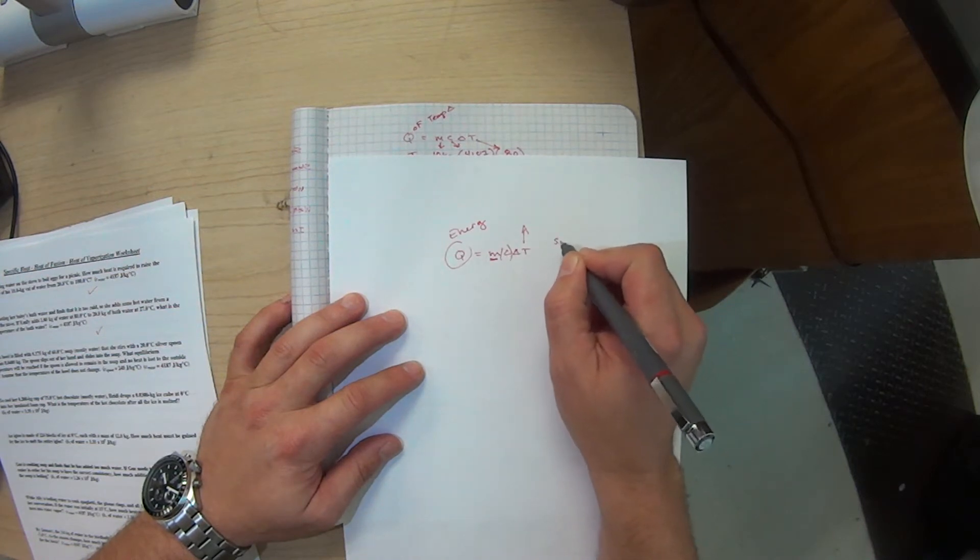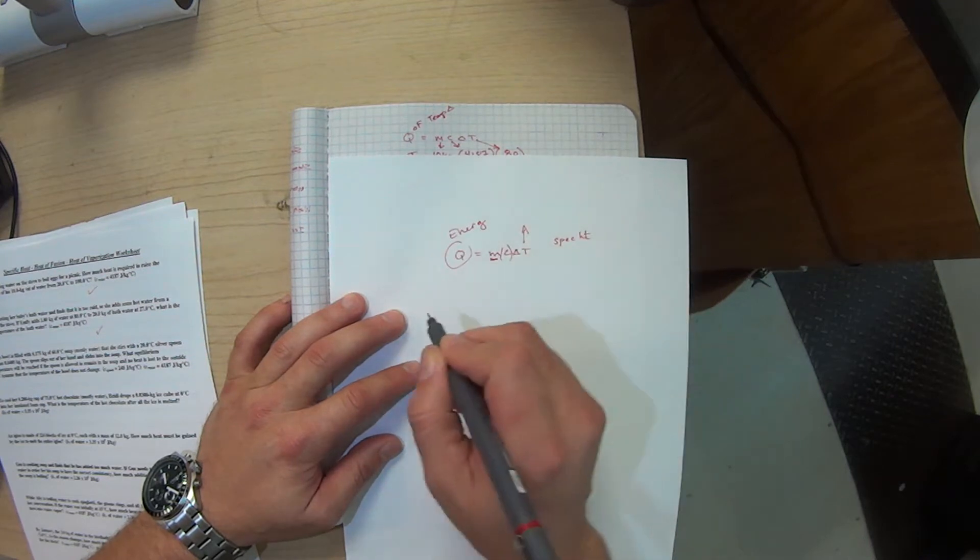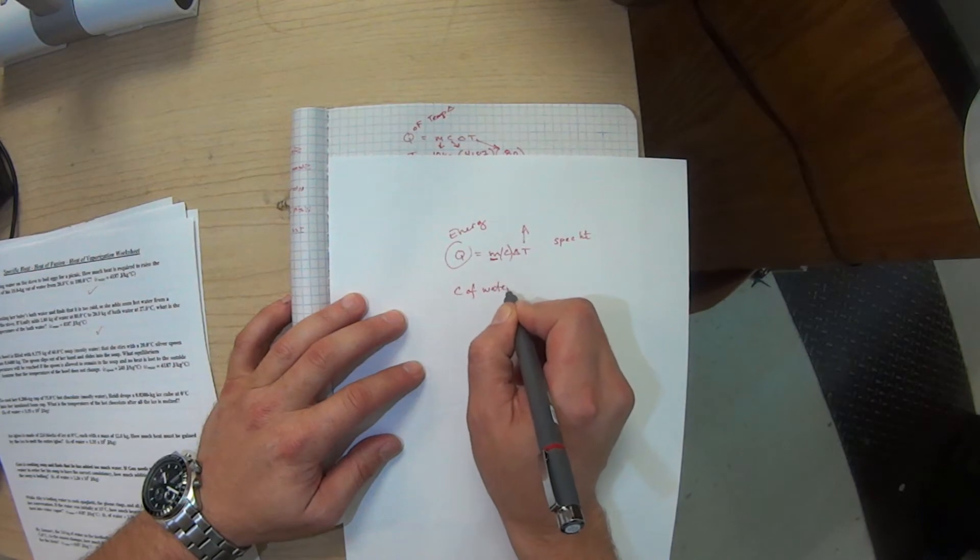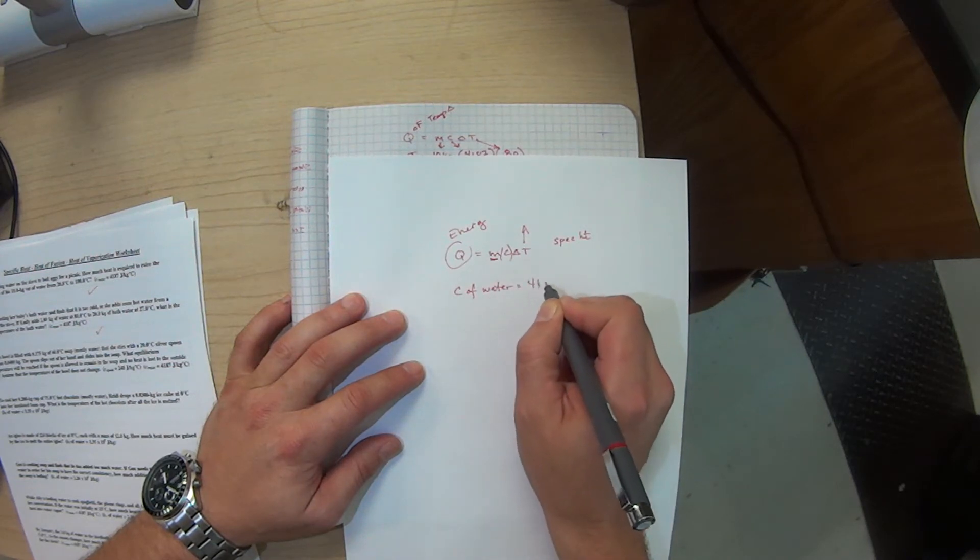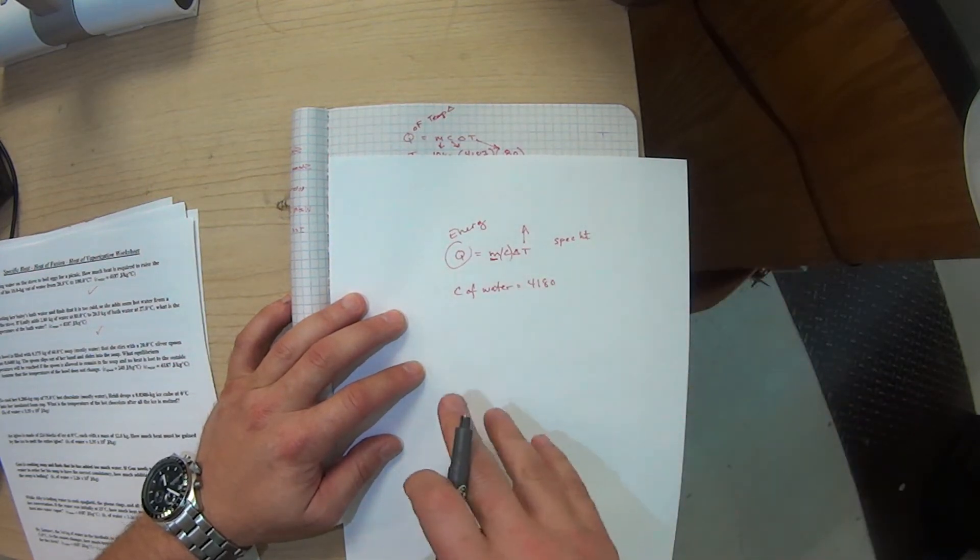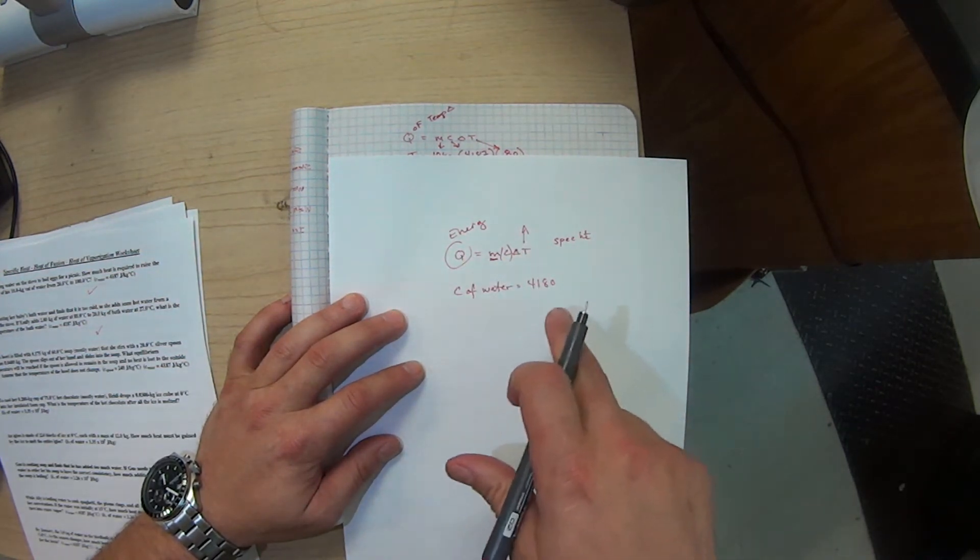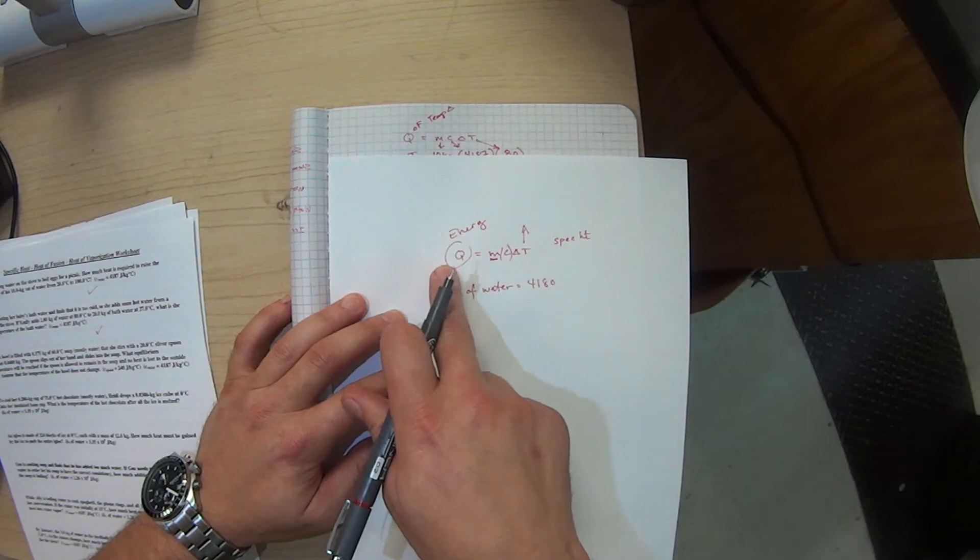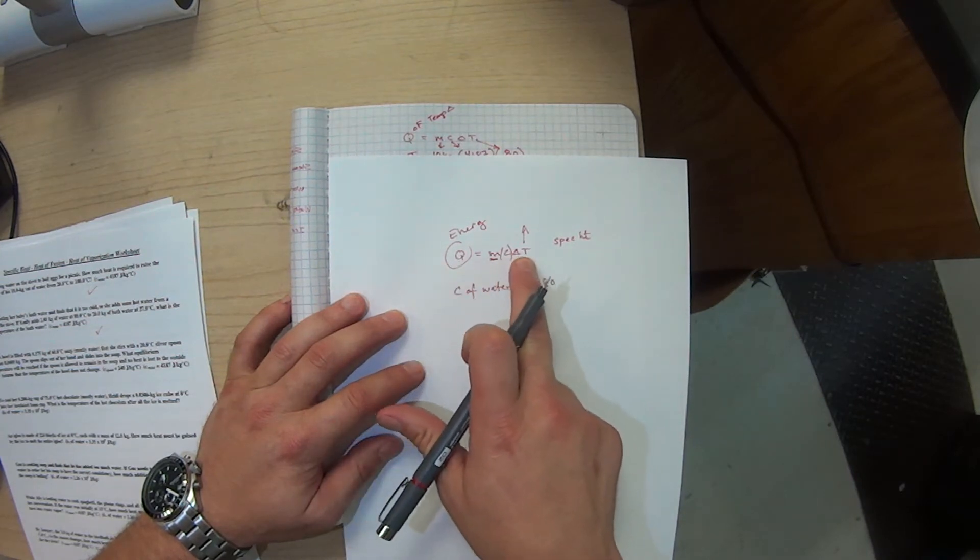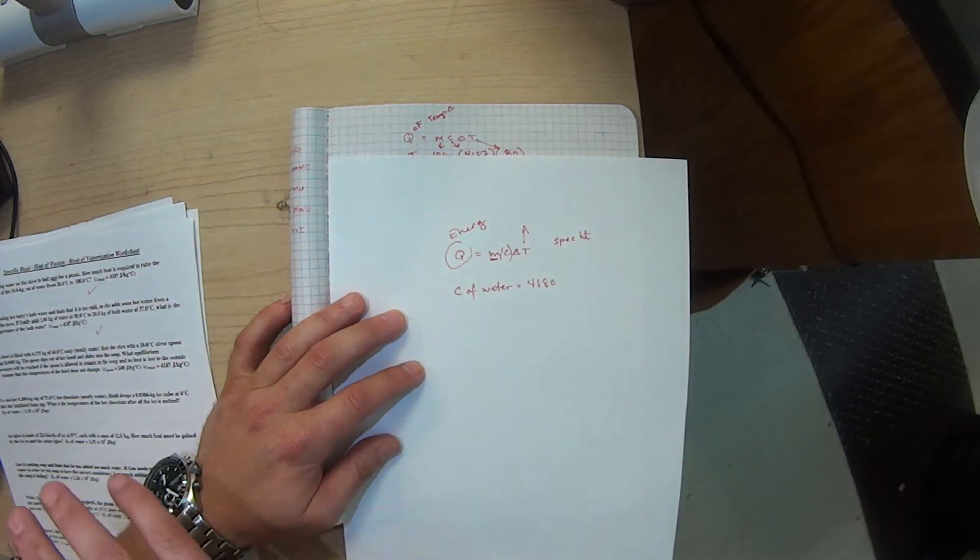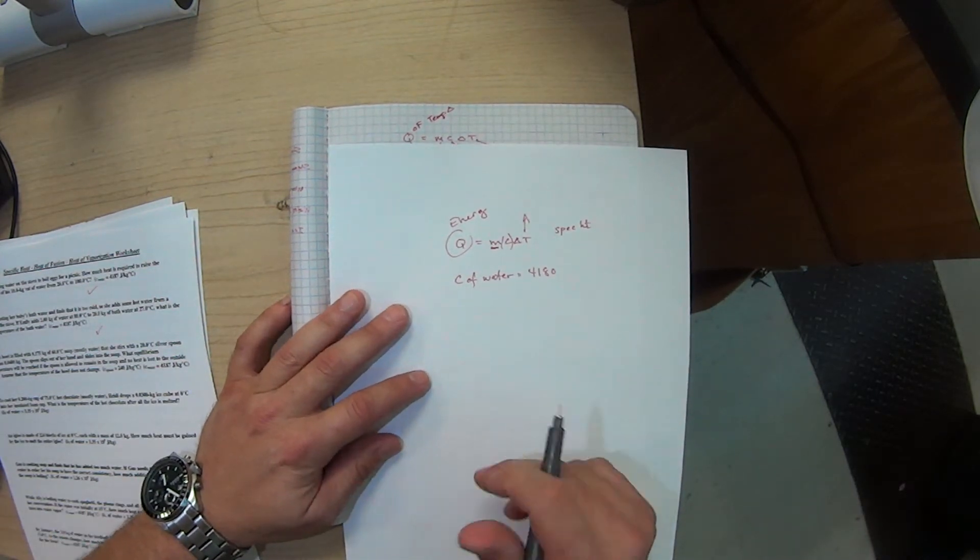C is specific heat that'll be given to you on the test tomorrow as C of water equals in this case 4180. We could have the C of copper, the C of ice, the C of a lot of things, but when you're finding the energy it takes to change the heat of a substance, the C of that substance is very important.